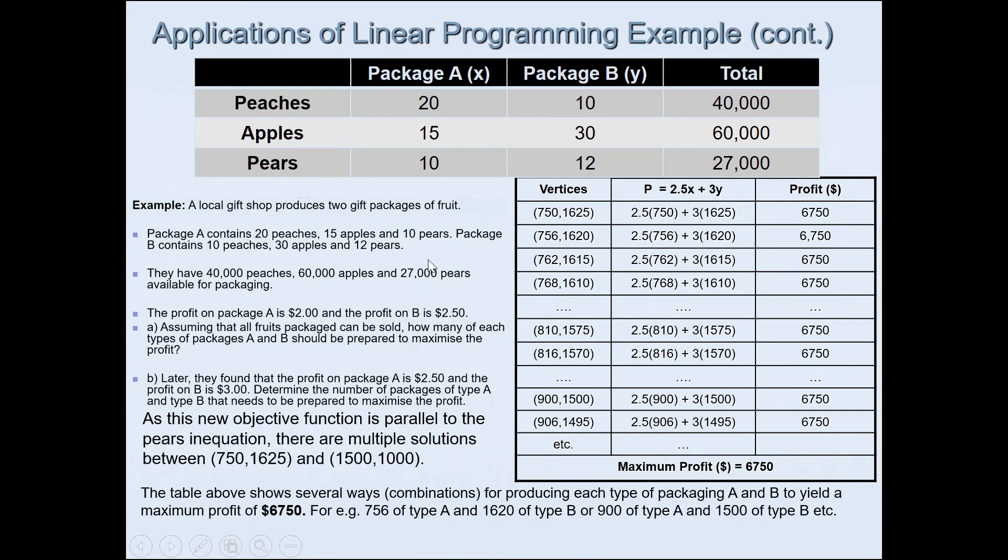The table shows several ways or combinations for producing each type of packaging A and B to yield a maximum profit of 6750. For example, 756 of type A and 1620 of type B or 900 of type A and 1500 of type B, etc., will give you a maximum profit of $6,750. You would have noticed the pattern that I was talking about. If the production for package A increases by 6, then the production for package B should decrease by 5.